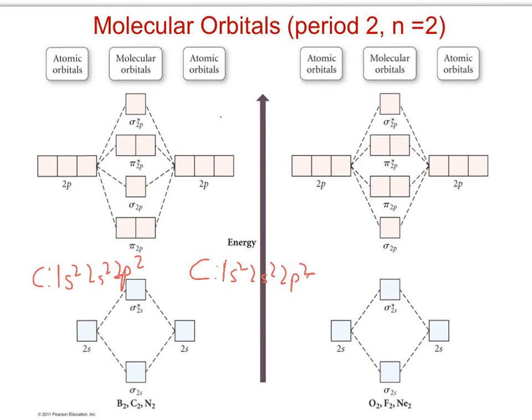So carbon: 2s up, down. Hund's rule: up, down. I'm just doing the atomic orbitals first. Then up, up, Hund's rule. That's generated from the atomic orbitals, the ground state electronic configurations. This would be if you had an individual carbon atom.